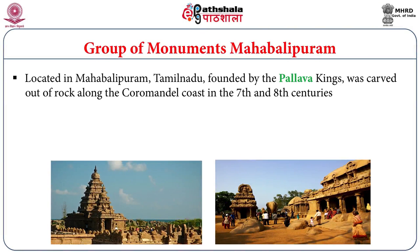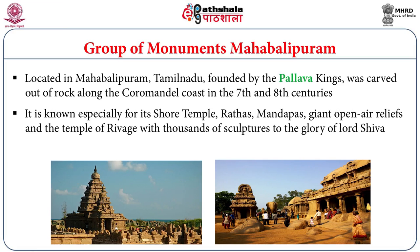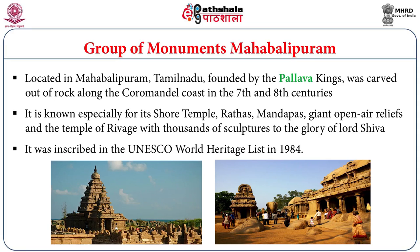The Group of Monuments at Mahabalipuram is located near Chennai in the state of Tamil Nadu. These monuments were founded by the Pallava kings and carved out of rock along the Coromandel Coast, dating between the 7th and 8th centuries. The speciality of the site is the Shore Temple, and it features Rathas, Mandapas, open-air reliefs, and other temples with thousands of sculptures glorifying different gods and goddesses with a special attraction of Lord Shiva. It was inscribed as a World Heritage Site in the year 1984 and is close to the city of Chennai.